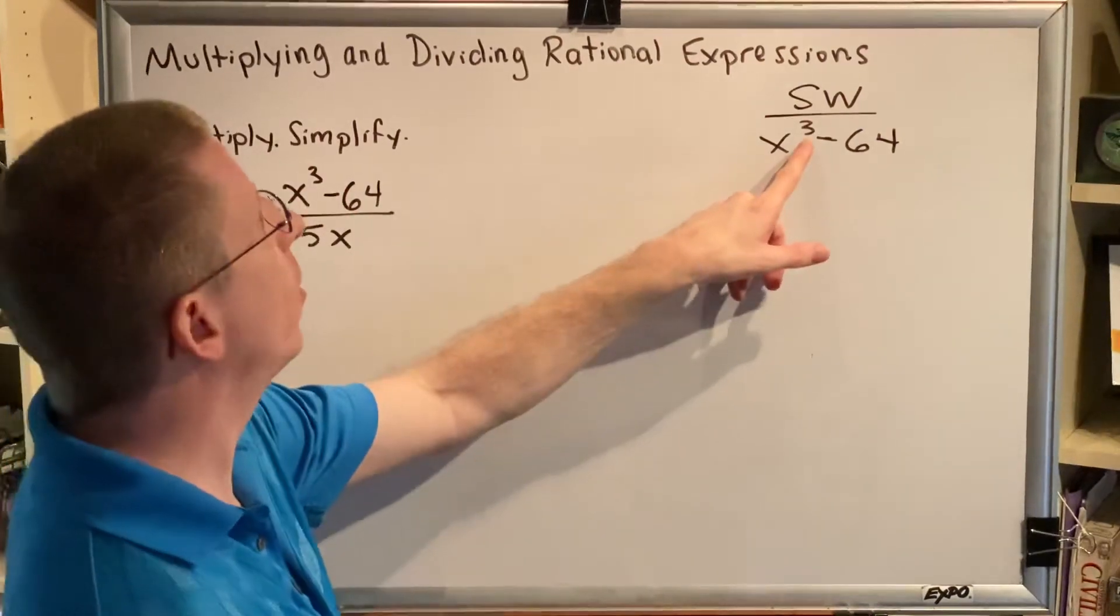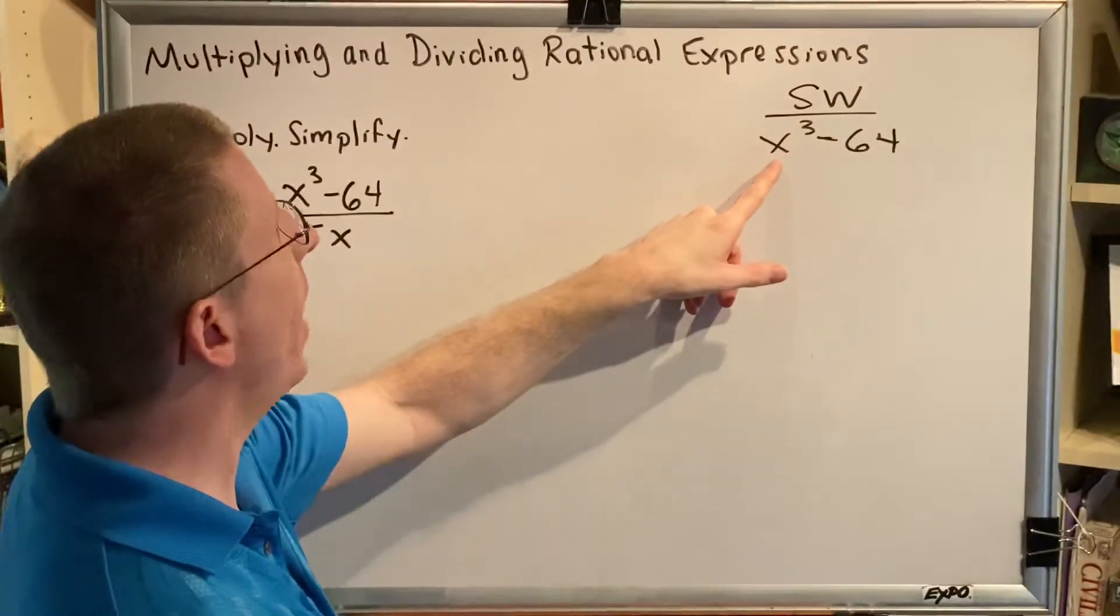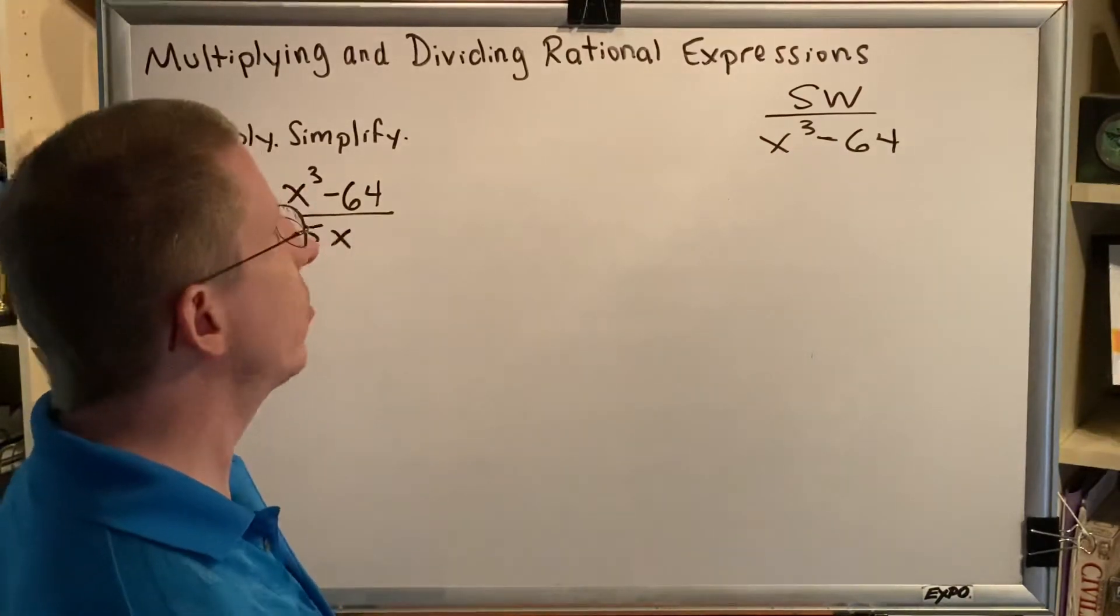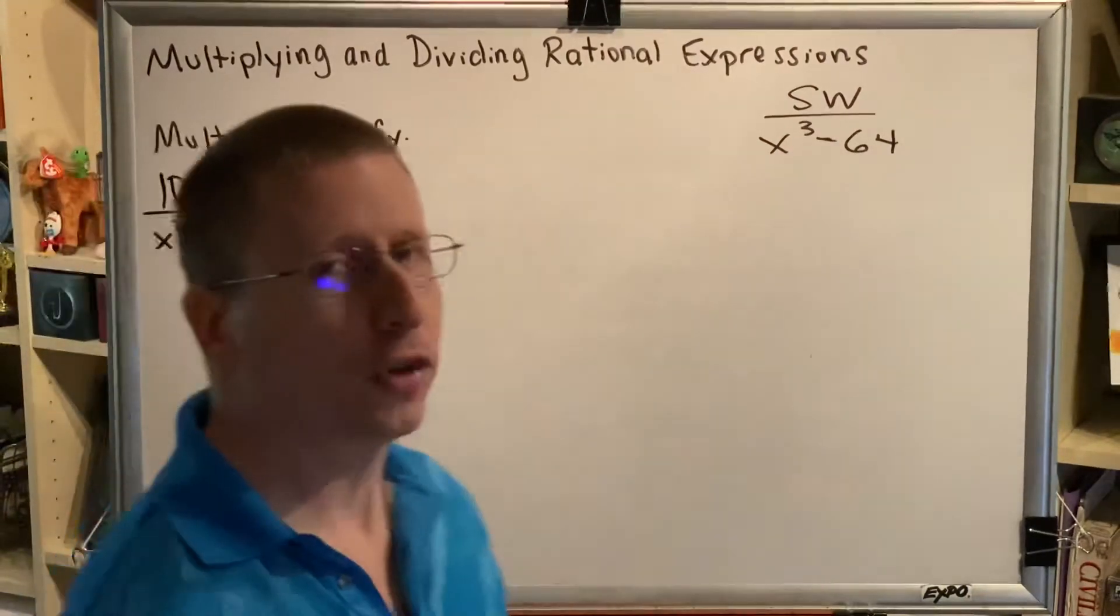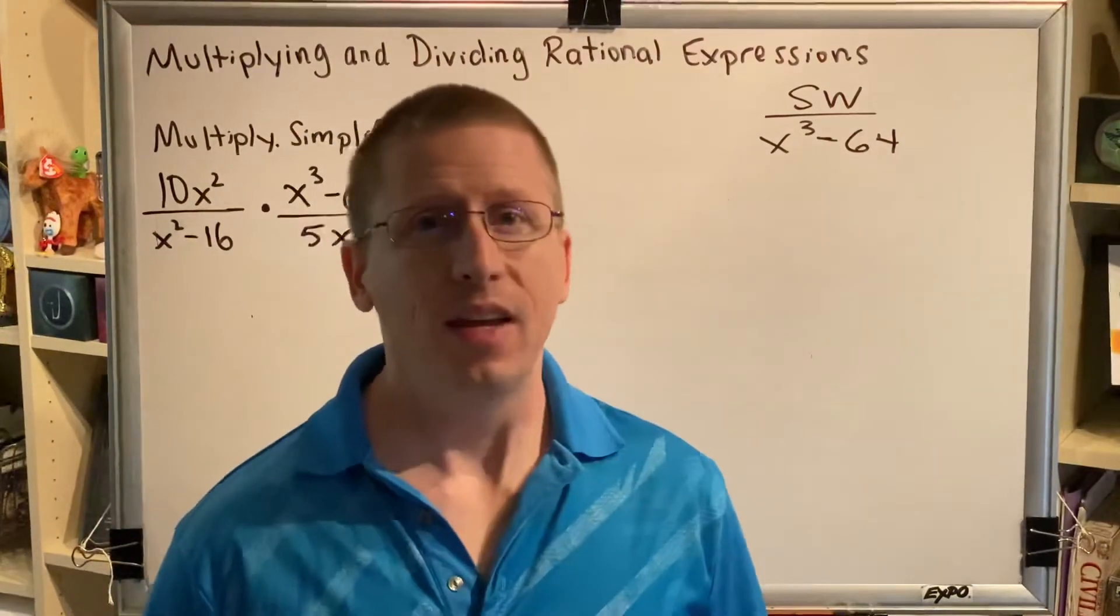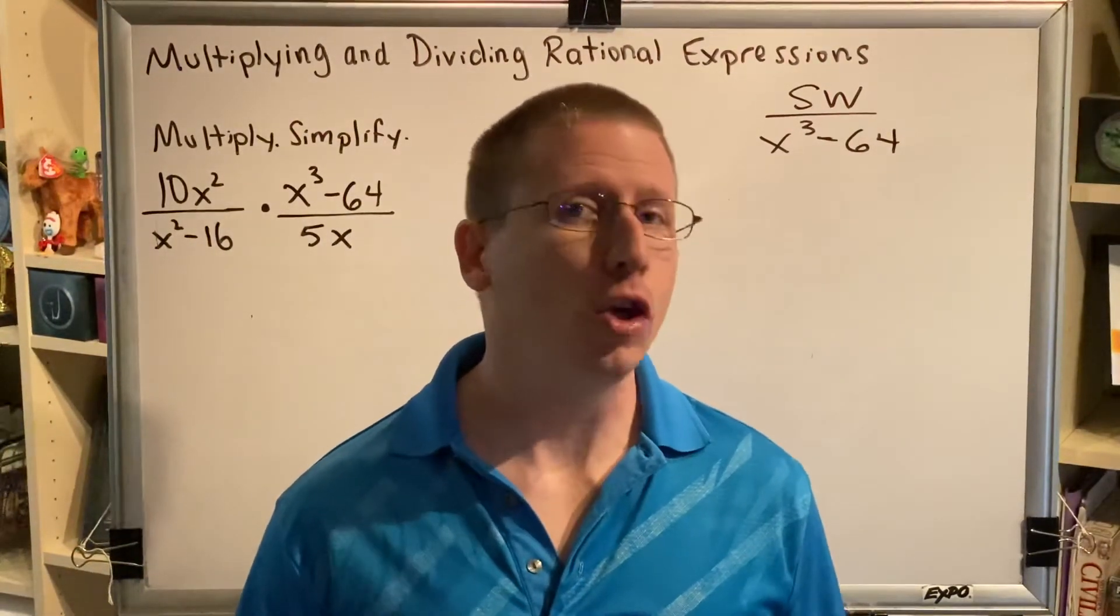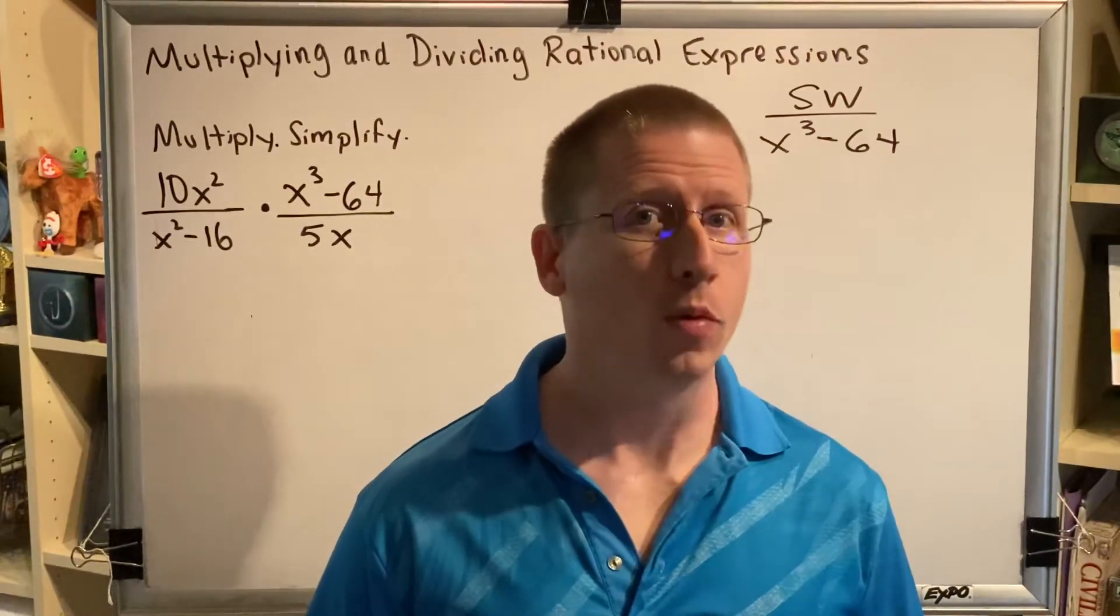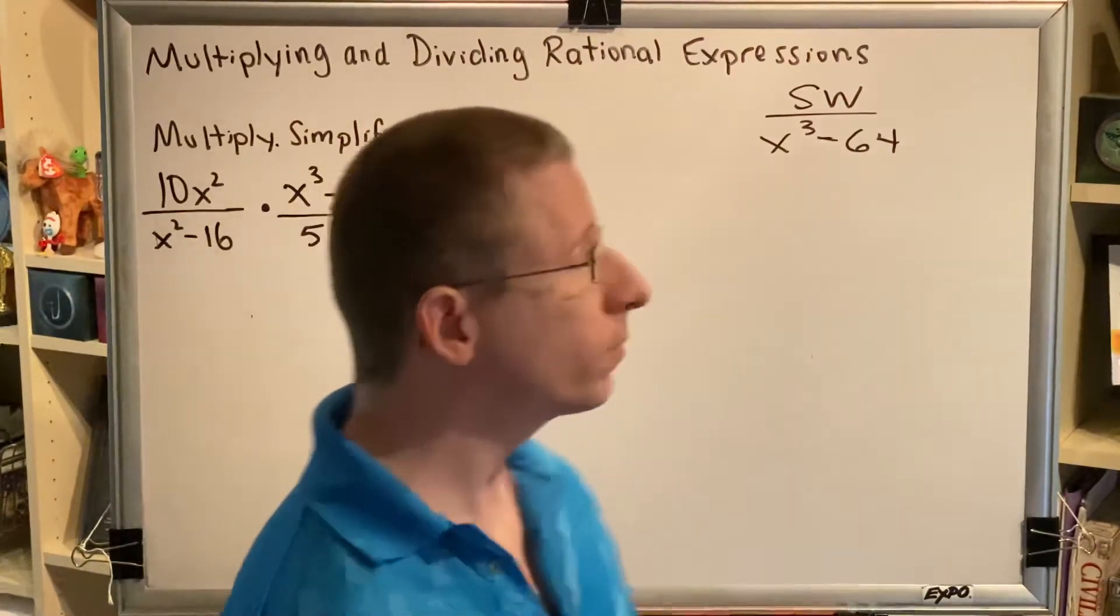The hint is that this exponent is three. If you pronounce this out loud, you would say x cubed. So we just have to ask ourselves, is 64 also a cube? Or, phrased perhaps another way, is there a nice, easy cube root of 64? And the answer is yes. The cube root of 64 is 4.